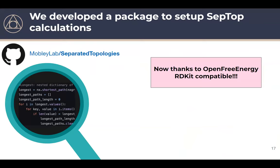We wrote a package to set up these calculations, originally developed in the Mobley lab, which runs in the GROMACS MD package. Richard Gowers from OpenFE helped integrate support so that users can choose between OpenEye's OEChem or RDKit to set up ligand topologies — I'll go into a bit more detail on that shortly.